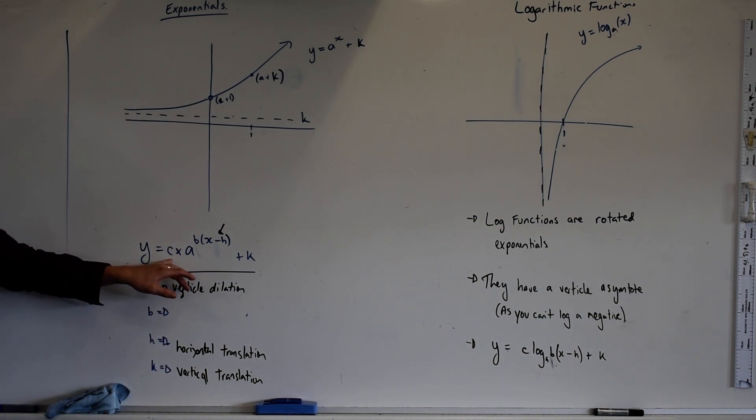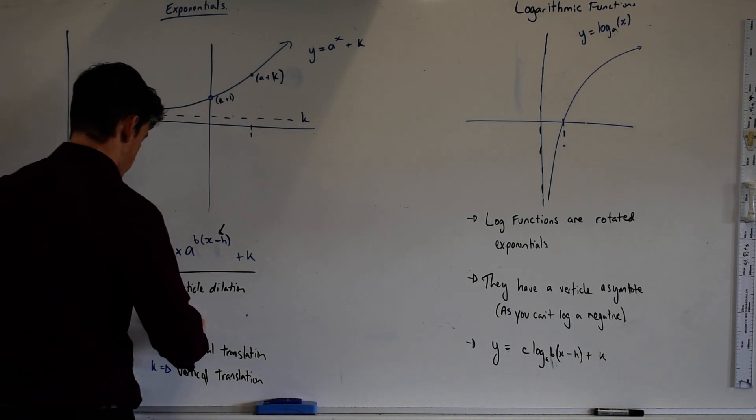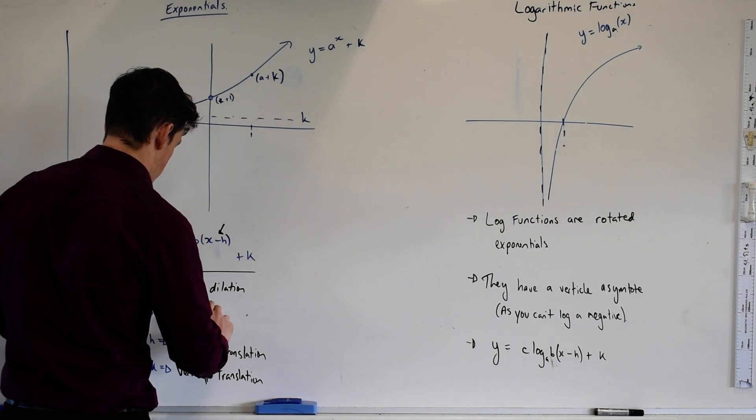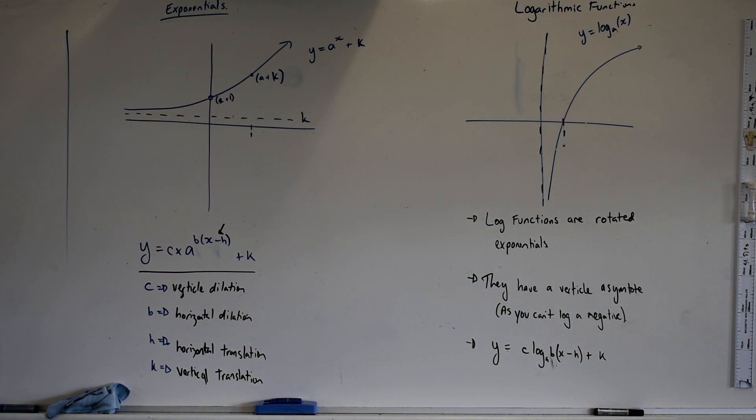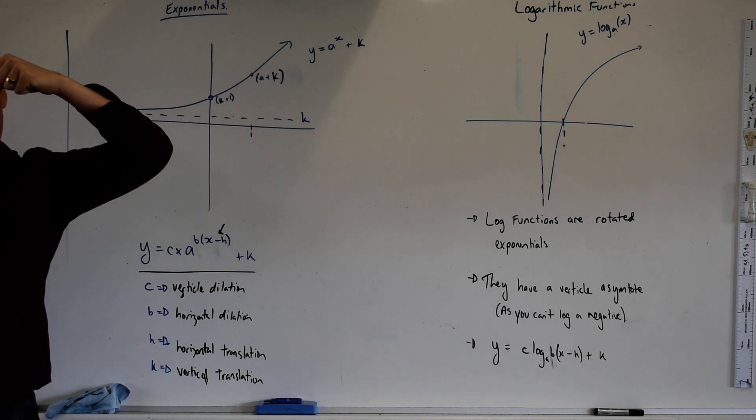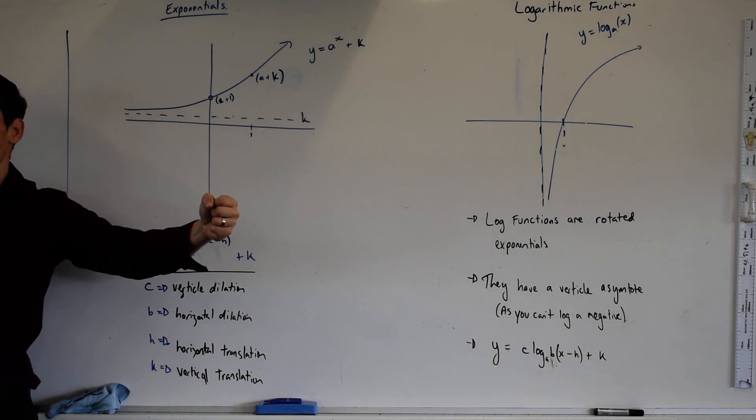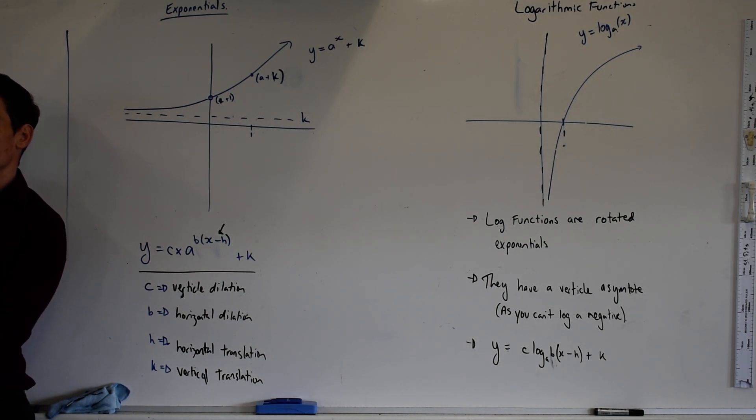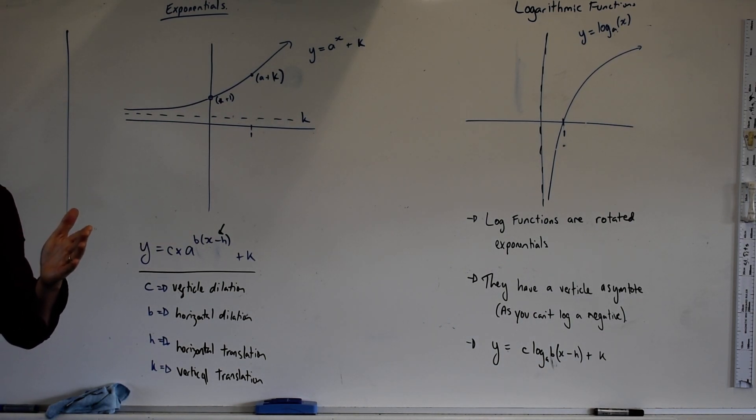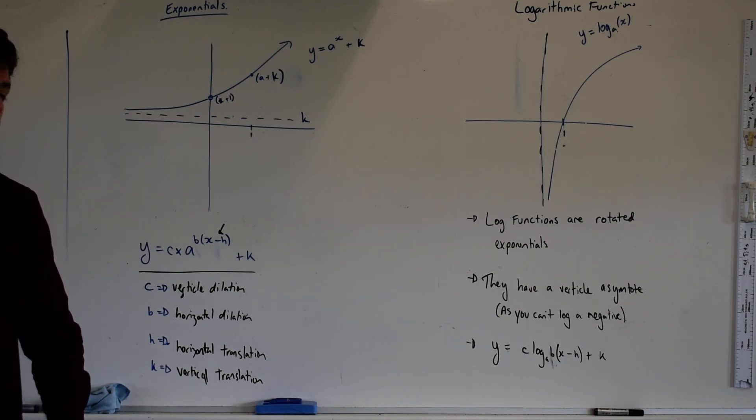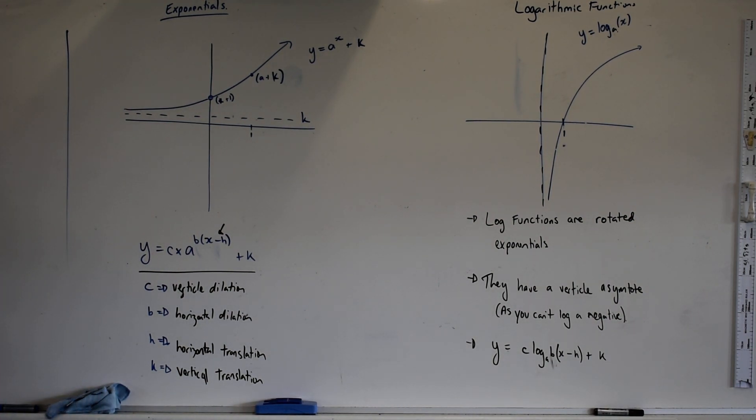Well if that's a vertical dilation, vertical stretching, b is going to be a horizontal dilation. So if we stretch it horizontally by a factor of 2, that's like stretching it vertically by a factor of a half. You've compressed the function. If you stretch it vertically by a factor of 2, you've stretched it horizontally by a factor of a half. You've compressed the function. And vice versa, if you stretch it horizontally, you've compressed it vertically.